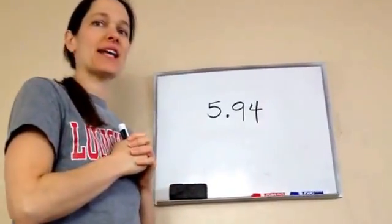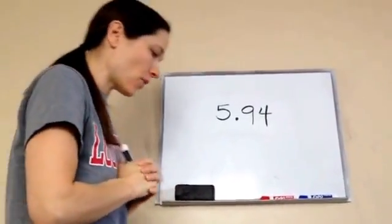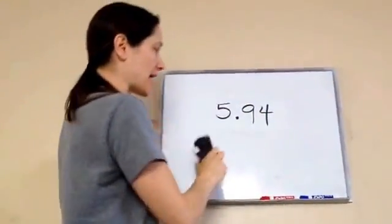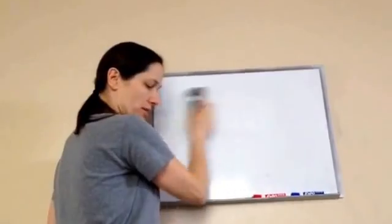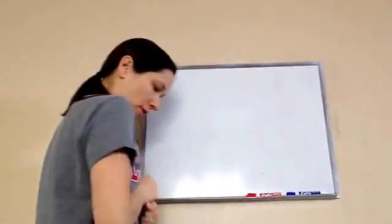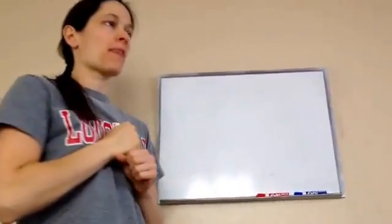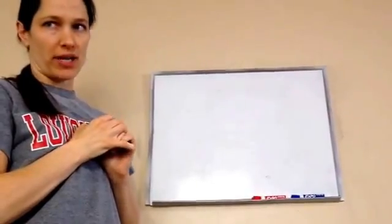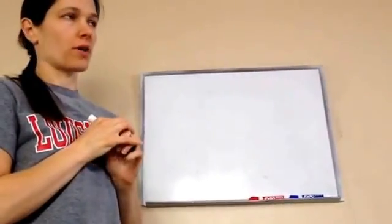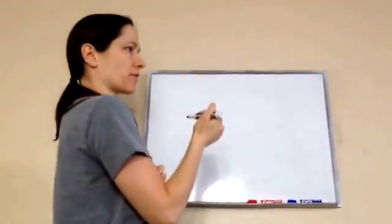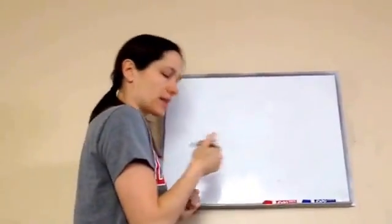Fifth grade, lesson 94. This is on using estimation when you're dividing by two-digit numbers. I want to teach you a trick that we talked about a few weeks ago.